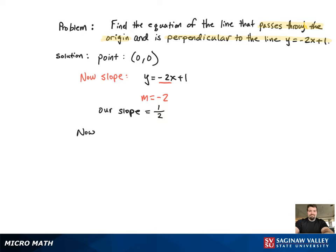Now we have a point and a slope, which means we're good to write down the equation for our line. We're just going to start with the equation in slope-intercept form, y equals mx plus b.